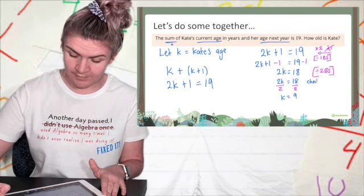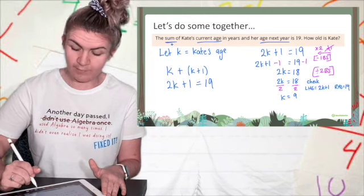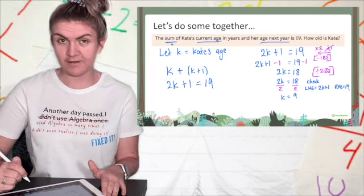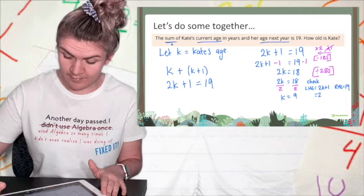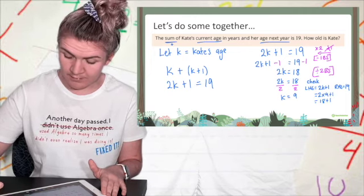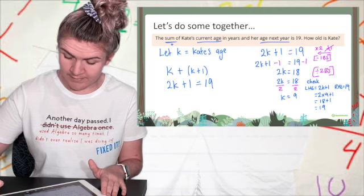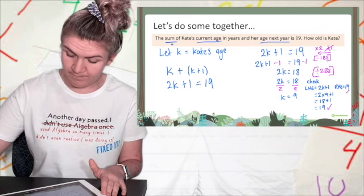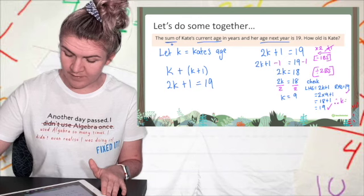I'm going to check. So I'm replacing my k with what I think k is, and that's 9. 2 times 9 plus 1. 2 times 9 is 18, plus 1, 19. They're both the same. Therefore, k equals 9.